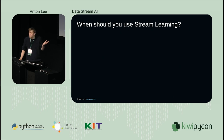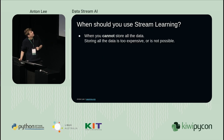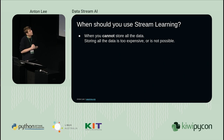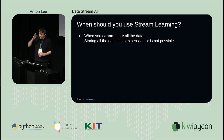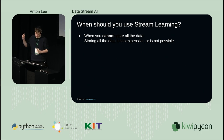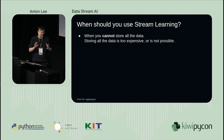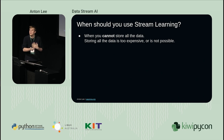Why should you use stream learning? It's a tool - it's useful for a particular set of problems. One use case is when you cannot store all the data because it's too expensive or not possible. In data stream learning, the main technical constraint is you only want to look at an item of data once - like a sensor reading - and then you don't really care where it goes. You're trying to make decisions about it in real time.